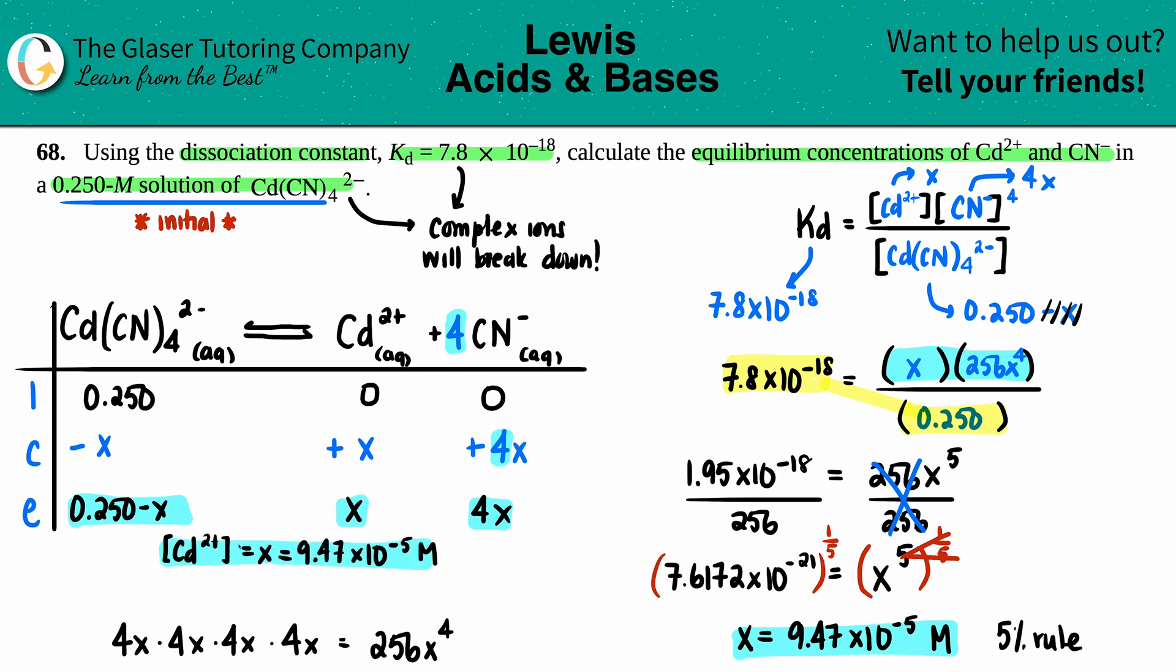Now we have to find the CN- concentration. At equilibrium, the CN- was four times that, so I just have to plug in the x value for four. 9.47 times 10 to the negative fifth times four, and we get 3.79 times 10 to the negative fourth molarity.